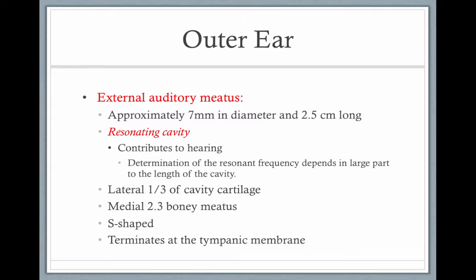Your external auditory meatus, or external auditory canal, is approximately 7 millimeters in diameter and 2.5 centimeters long. It's a resonating cavity — resonating means amplify — and it contributes to hearing. The resonant frequencies depend largely on the length of the cavity, and the frequencies most important to speech, the mid and high frequencies, get resonated by our ear canal.